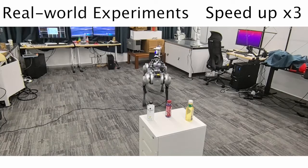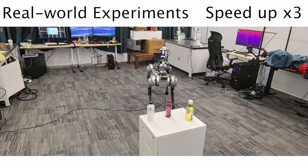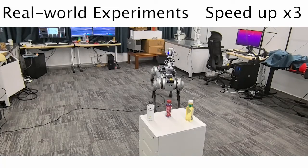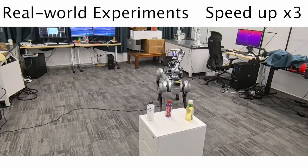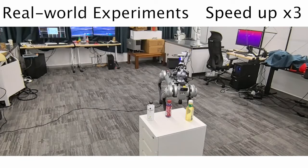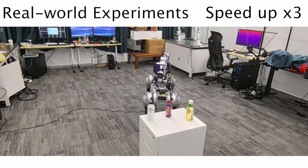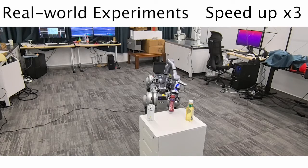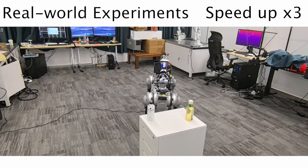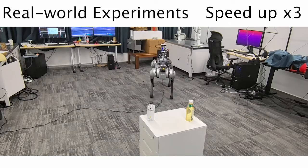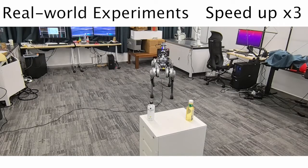Here's a real-world demo of our graspability aware policy. In this experiment, the target objects are bottles. While the policy knows the location of target objects, no geometrical priors are known to it. After grasping an object, the robot is manually controlled to move away from the target and proceed to grasp the next object.